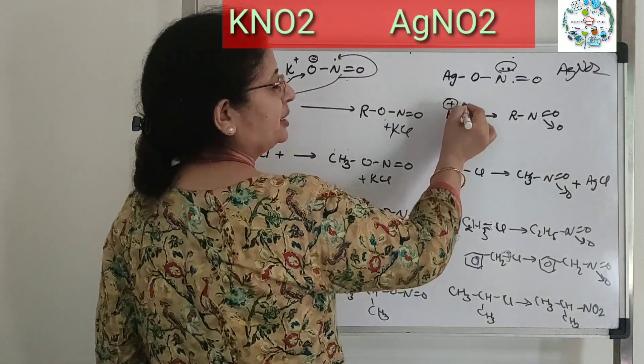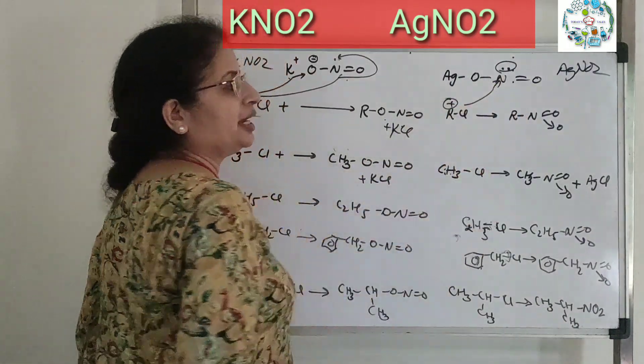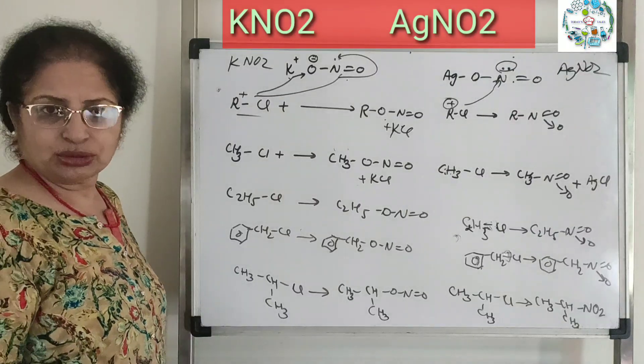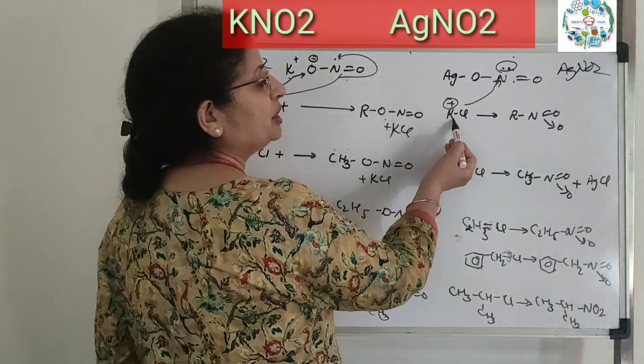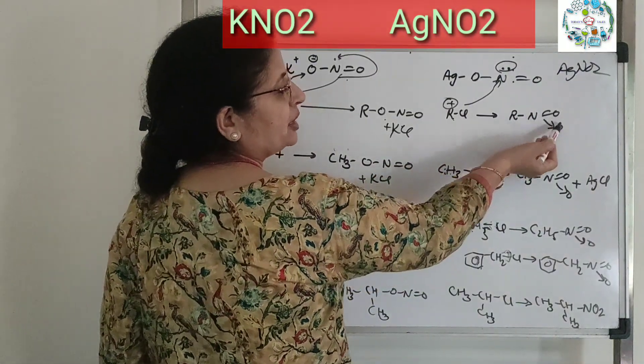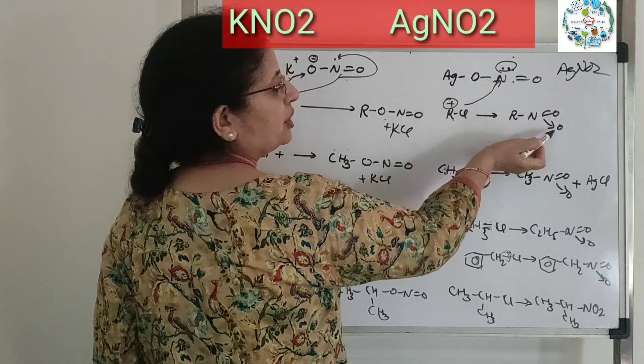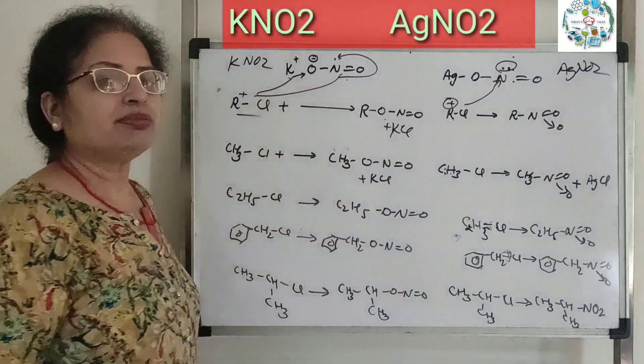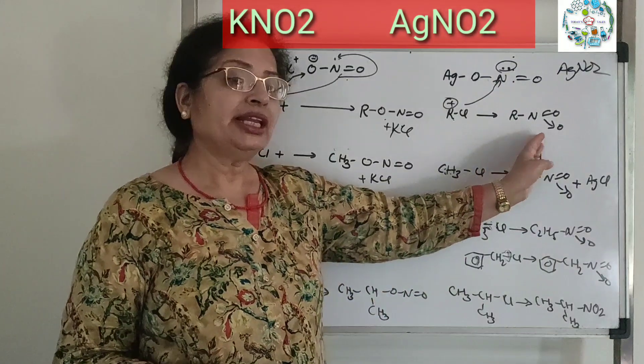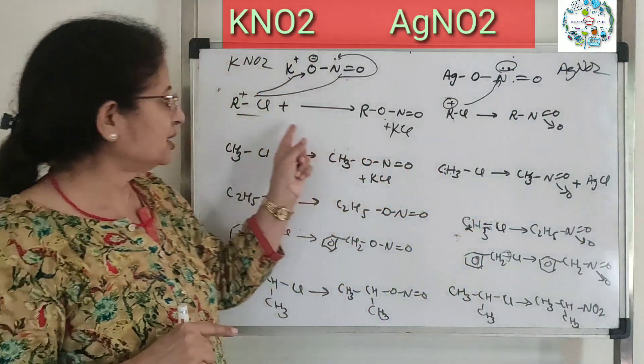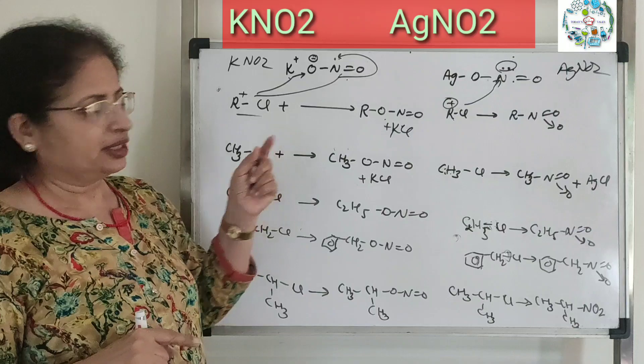So this R plus cation has only one option - to attack at nitrogen. So here you get R bonded to nitrogen with N double bond O and a lone pair. This becomes R-NO2, meaning nitrogen links to R. Whereas with KNO2, oxygen was linking.